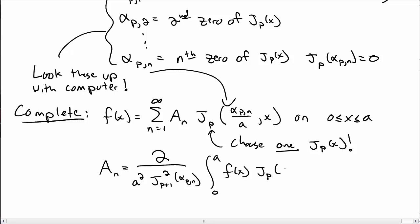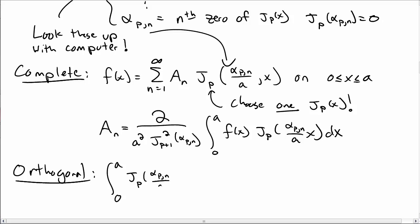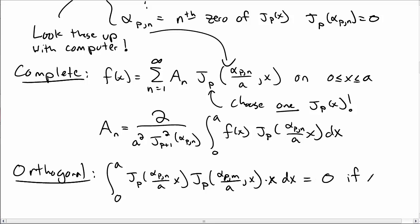The coefficients A_n can be computed via an integral from 0 to A of the function times the Bessel function dx. Bessel functions are also orthogonal: if you multiply two Bessel functions with the same p but different zeros α_{p,n} and α_{p,m} and integrate with respect to x, you get 0 unless n = m.